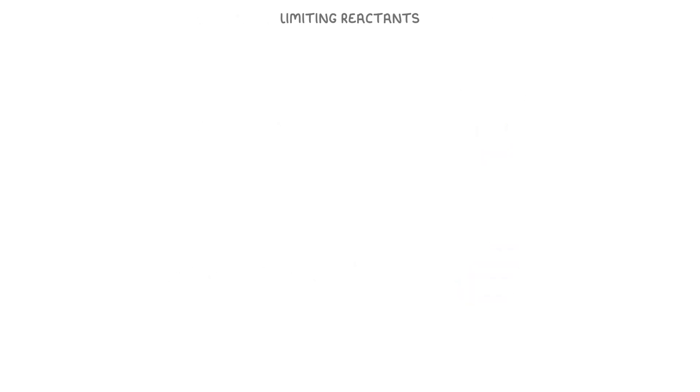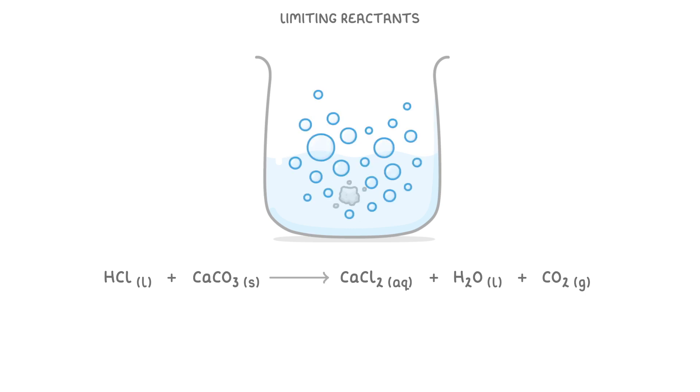To see what a limiting reactant is, let's imagine that we had a beaker of hydrochloric acid and we dropped in some calcium carbonate. As the hydrochloric acid and calcium carbonate react, they will produce calcium chloride, water, and carbon dioxide. We'll be able to see that a reaction is taking place because the solid calcium carbonate will slowly disappear and bubbles of gas will be given off, which is our carbon dioxide.